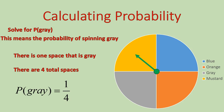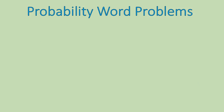And that makes sense if you look at this circle with the spinner there. It's one-fourth of the circle is made up of gray. If we spin this around, the probability is one-fourth.